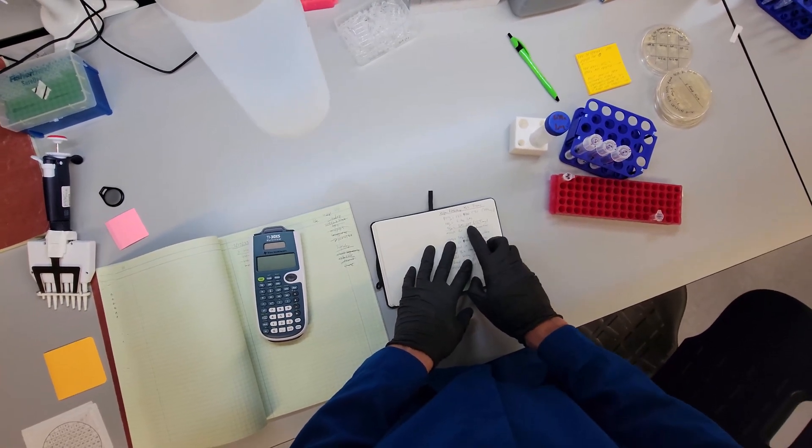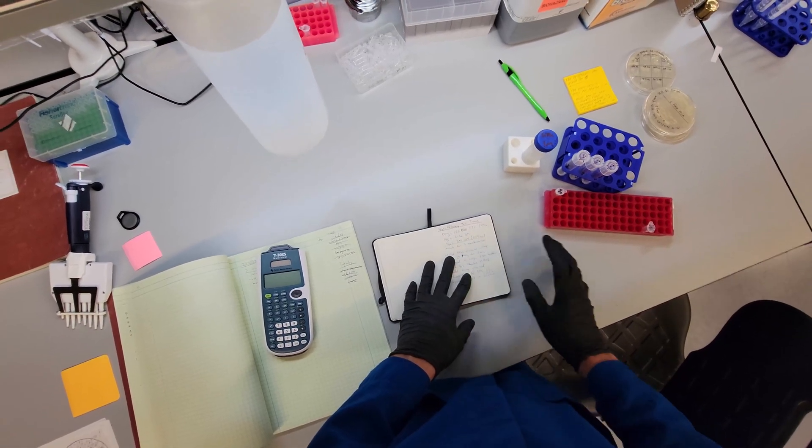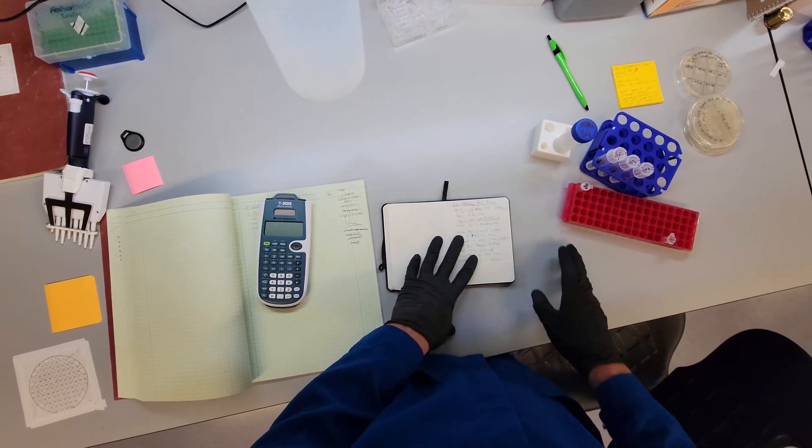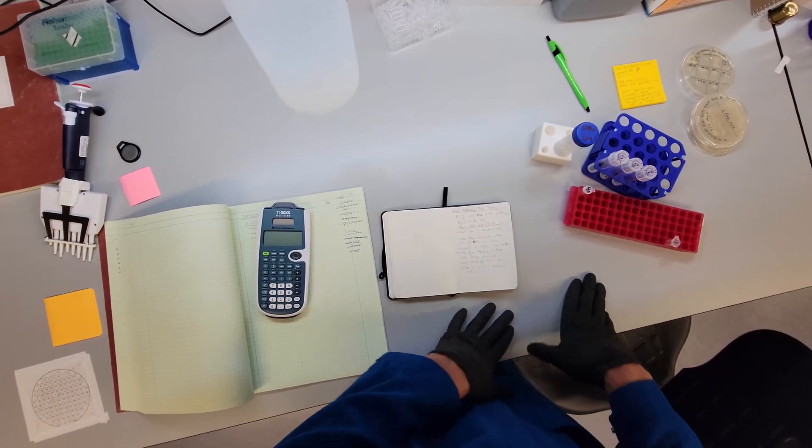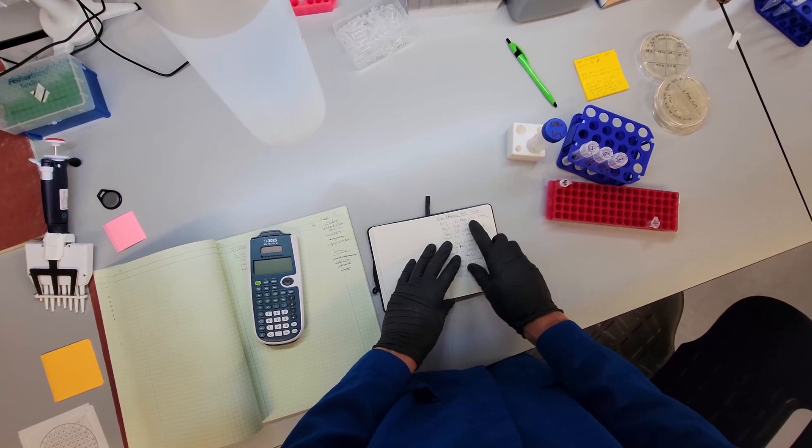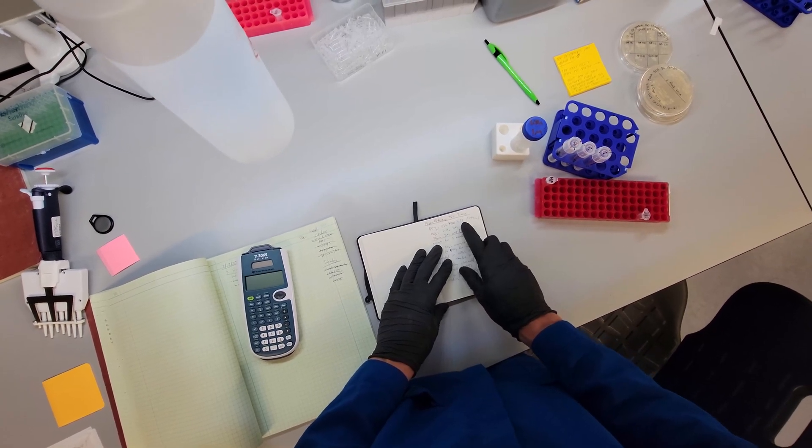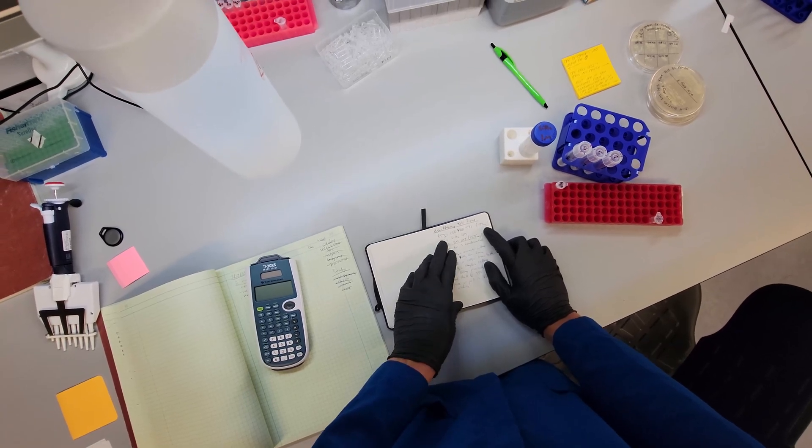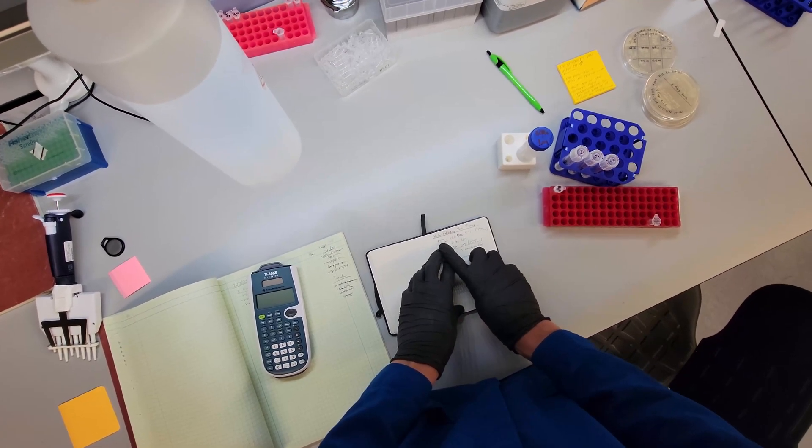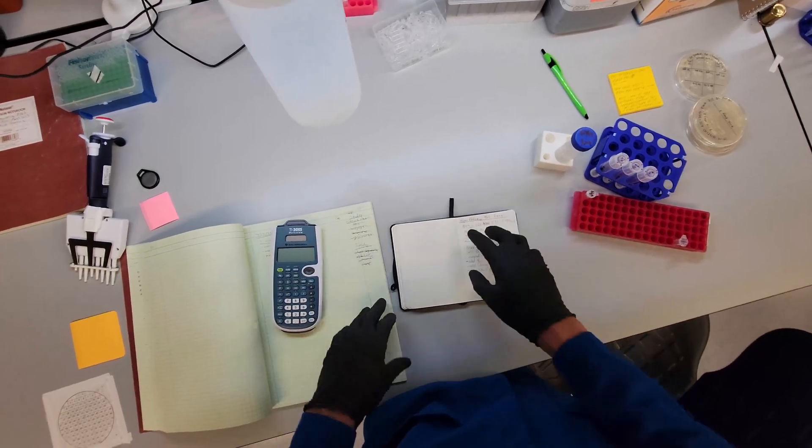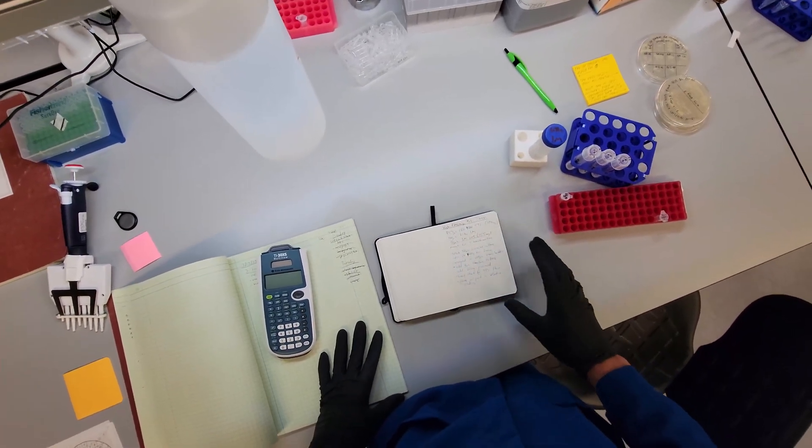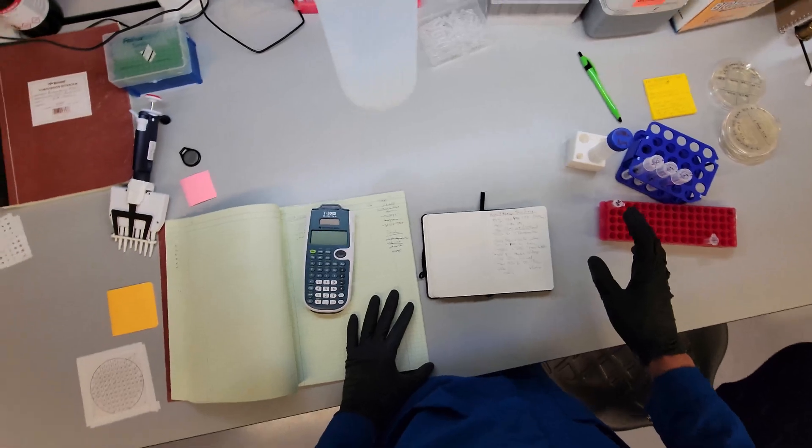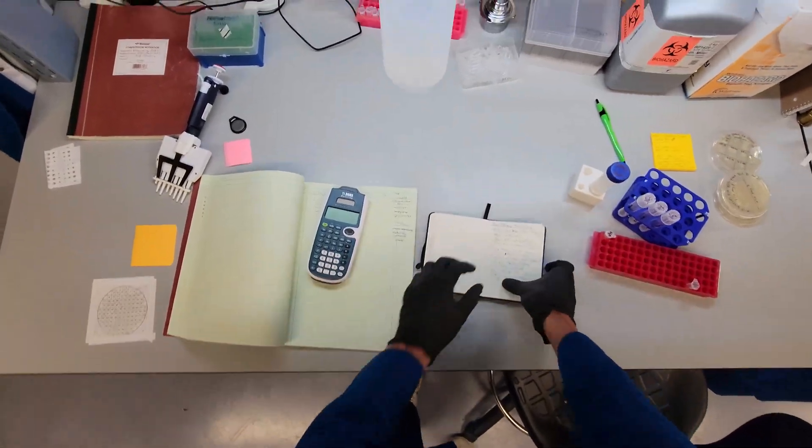The DTT should be made fresh. The PEG, I don't think it needs to be made fresh, but we're going to do that today. So we want to make a 53% solution of PEG-4000. So I'll use 454 milligrams and then go to a final volume of 857 microliters. This isn't going to end up being perfect, but it will be close enough.